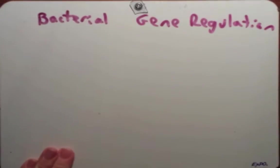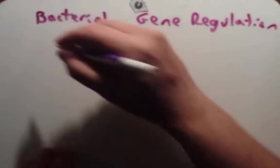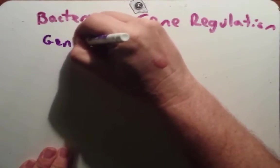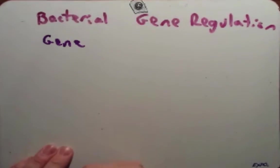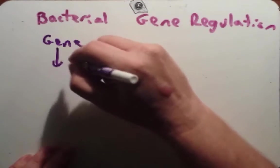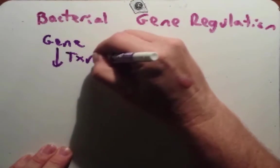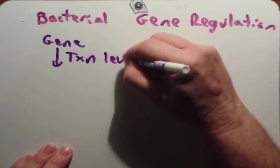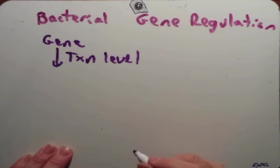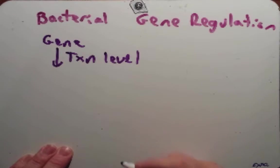Genes can be regulated at several different levels. More so in eukaryotes, but even in bacteria there are very complex systems to regulate genes. It can be regulated at the transcription level — when those genes are turned on or turned off — and that's probably the most important way that bacteria regulate their genes.